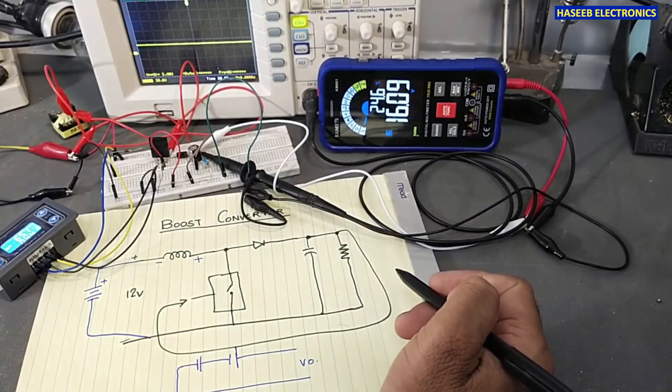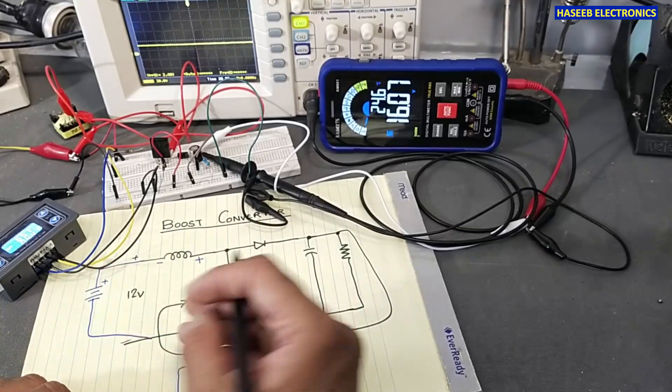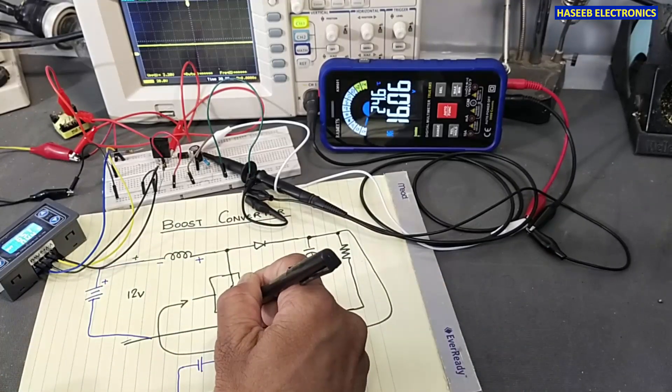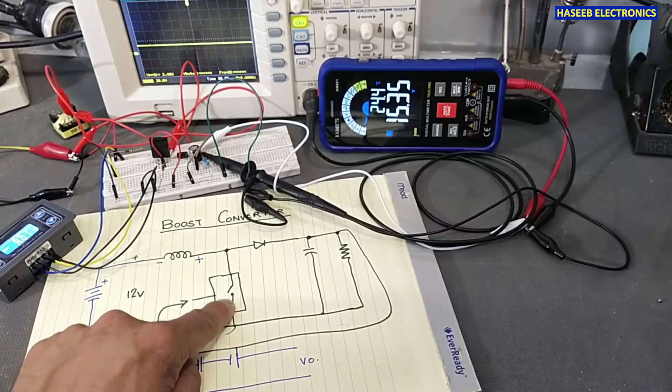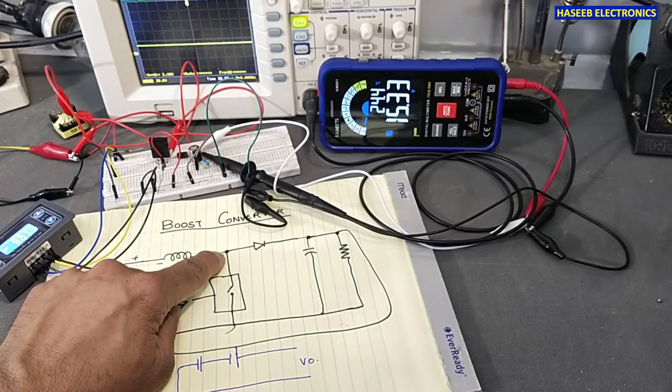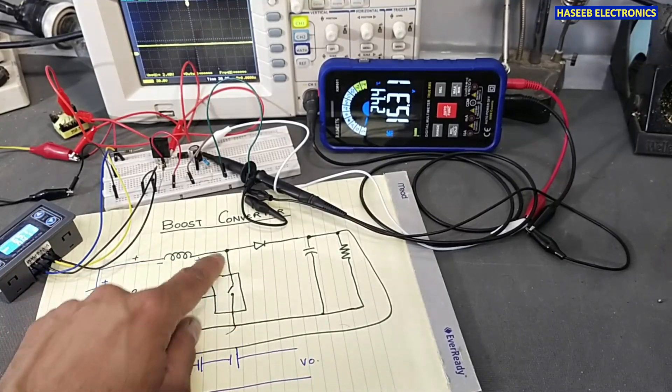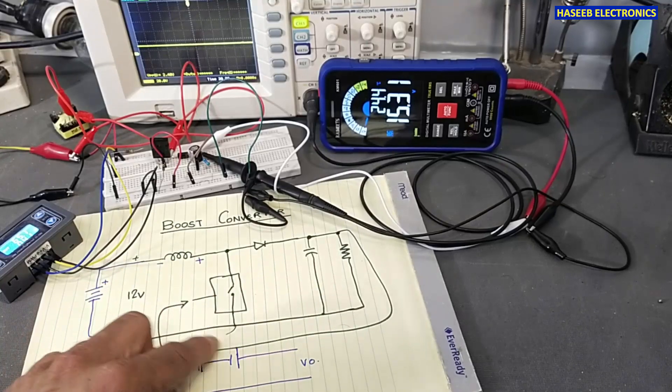This boost converter needs a current sensor - how much current we are drawing from this switch - because it will provide a direct surge on DC rail. If this transistor or this system is bad or anything is wrong, this system must turn off automatically.